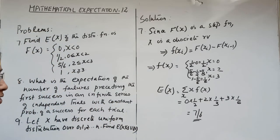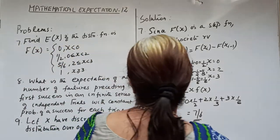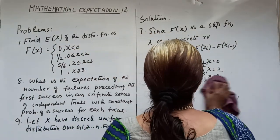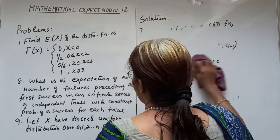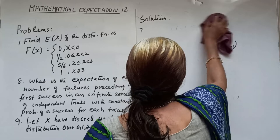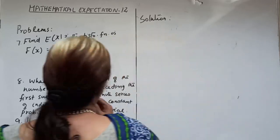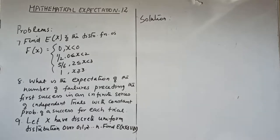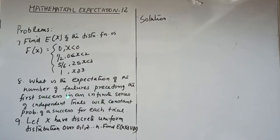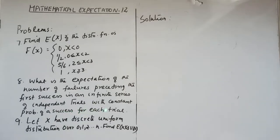The next problem: what is the expectation of the number of failures preceding the first success in an infinite series of independent trials with constant probability of success for each trial?